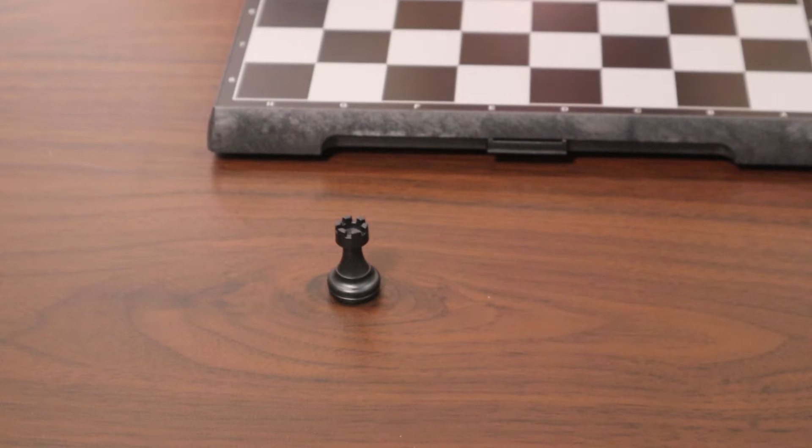This piece is called the rook, it looks kind of like a castle, and each player has two rooks.